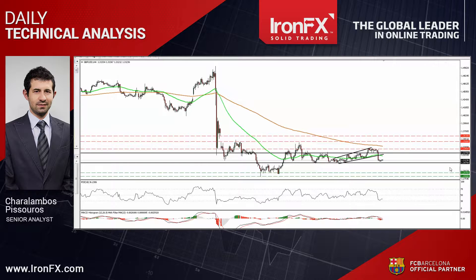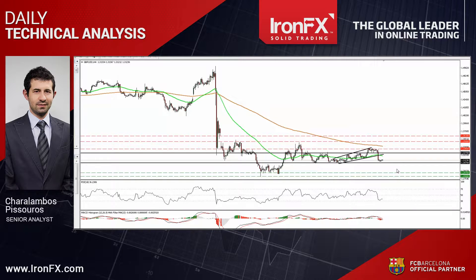A clear dip below 1.3070 is needed in order to make me more confident on the downside, something that may open the way for our next support zone of 1.2875. A solid US employment report today could be the catalyst for a break below 1.3070.